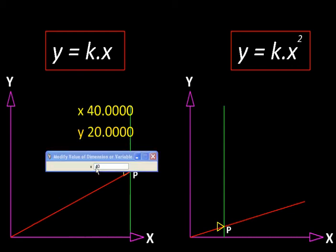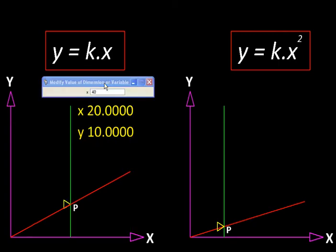Let us double it again, and y has doubled again. So, you would notice that doubling x doubles y. In fact, that is what we call as the linear variation.